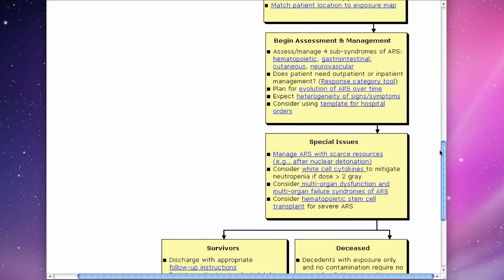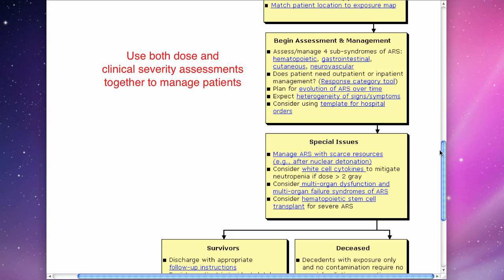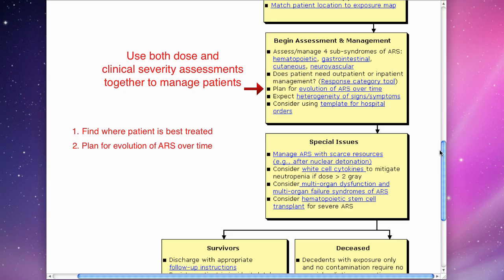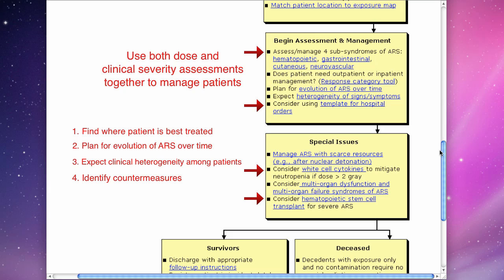It is important to use both dose and clinical severity assessments together to manage the patient and find where he or she is best treated, plan for the evolution of ARS over time, expect clinical heterogeneity of signs and symptoms among patients, and identify what countermeasures are appropriate and when.